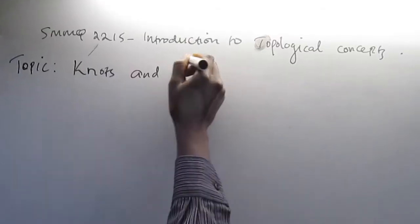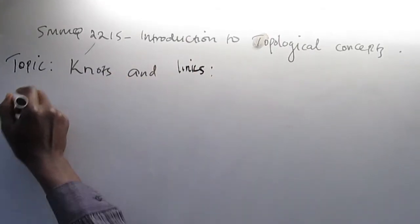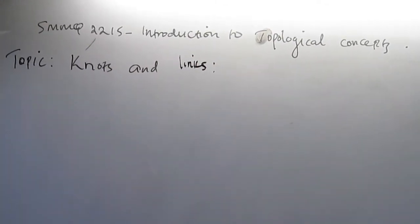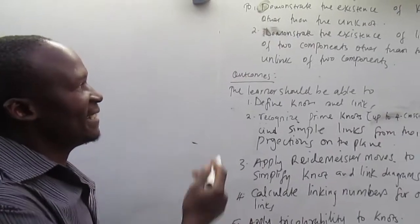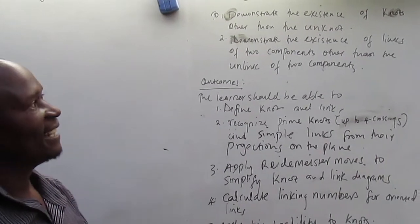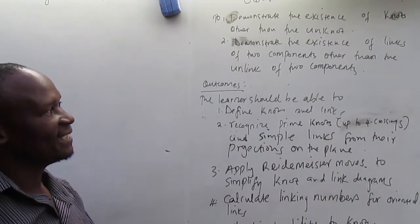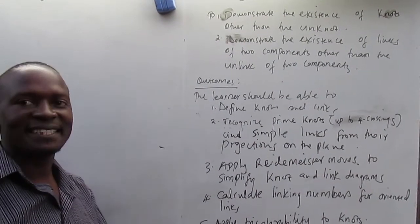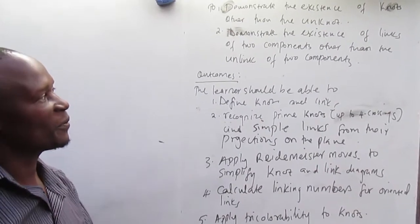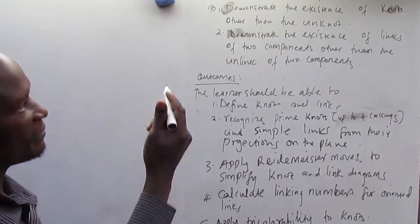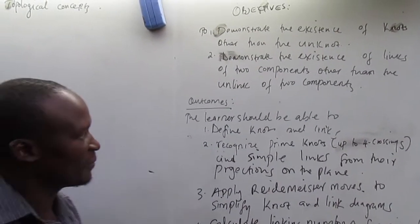Hello, my name is Ben and welcome once again to our lectures on introduction to political concepts. Today we are going to talk about knots and links. The objective of our lecture today will be to demonstrate the existence of knots other than the unknot, and also to demonstrate the existence of links of two components other than the unlink of two components. We will define those terminologies of course, so don't worry about them.